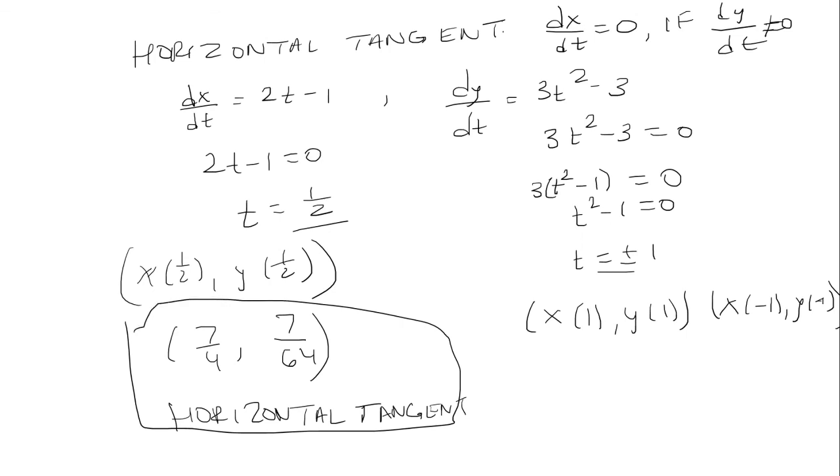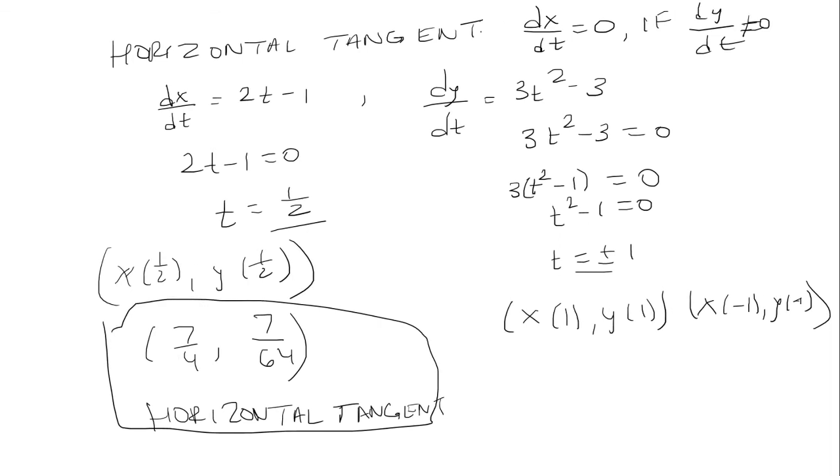And then here for x of one, y of one, etc. So for these, when t is positive one, you get 2 comma negative 2. And when t is negative one, you get 4 comma 2. And these are all vertical tangents.